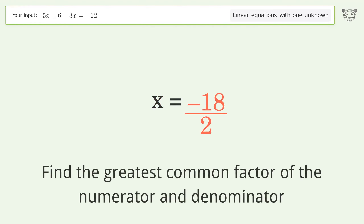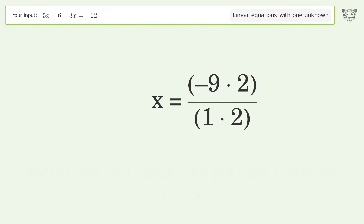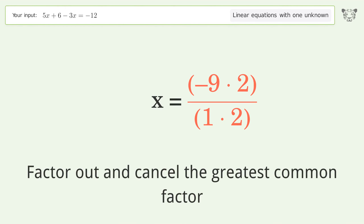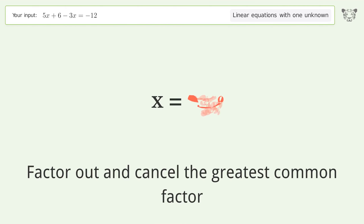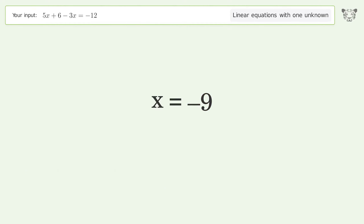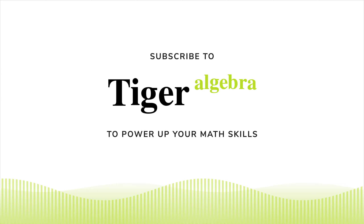Find the greatest common factor of the numerator and denominator, then factor out and cancel the greatest common factor. The final result is x equals negative 9.